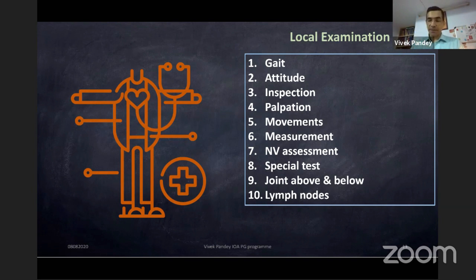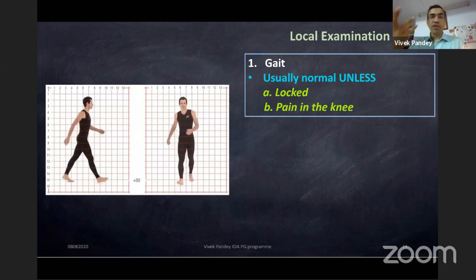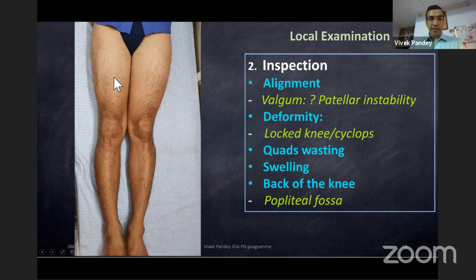Patients with ACL tear or ligament injury examined in the chronic phase usually have normal gait unless there is a locked knee or severe pain causing antalgic gait or stiff-knee gait. On inspection, always look at the alignment of the knee — before doing anterior drawer, Lachman, or posterior drawer, you need to know you are dealing with ACL tear and not patellar instability.